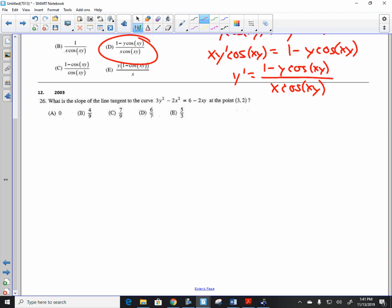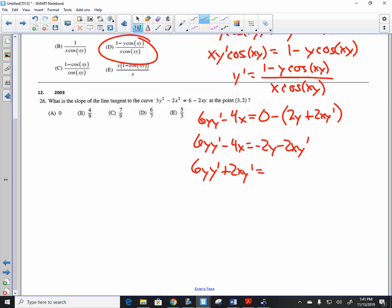And the last problem. What is the slope of line tangent to the curve? Find the derivative. 6, y, y prime minus 4x is equal to 0 minus product rule. 2, y plus 2, x, y prime. So 6, y, y prime minus 4x is equal to negative 2y minus 2xy prime. Gather your y primes on one side. 6, y, y prime plus 2xy prime is equal to 4x minus 2y. Factor out the y prime, you get 6y plus 2x.